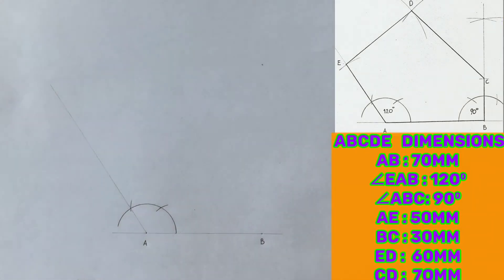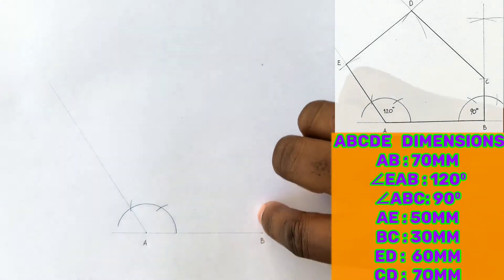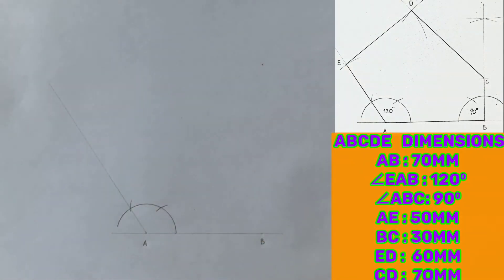Given that angle ABC measures 90 degrees, construct a 90 degree angle from point B.